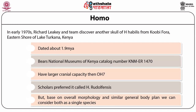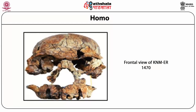To avoid confusion between Homo habilis and Homo rudolfensis, we will use the term 'early Homo' to mean both. The fossil of Homo rudolfensis was discovered from Koobi Fora on the eastern shore of Lake Turkana, Kenya, dated about 1.9 million years ago. It has a larger cranial capacity than OH7. Based on overall morphology and similar general features, we can consider both as one species.